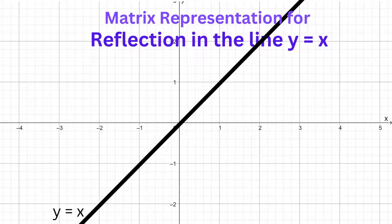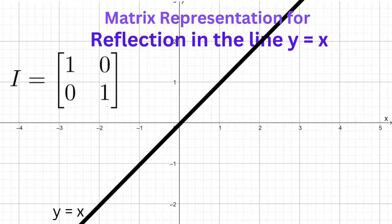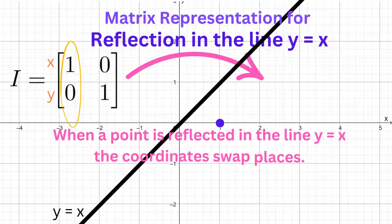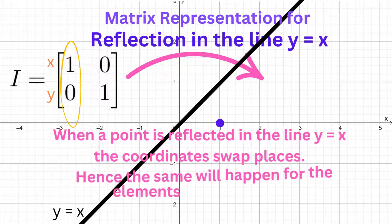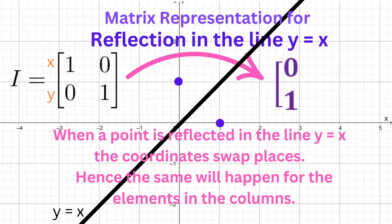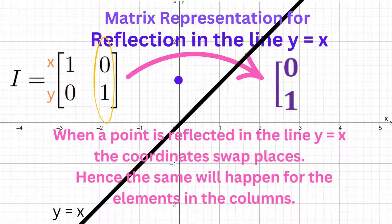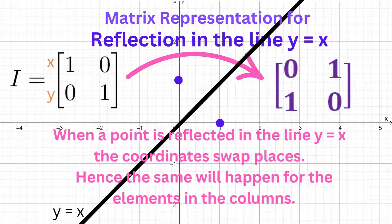Let's derive the transformation matrix for a reflection in the line y = x. As always, we'll get the reflection matrix by tweaking the identity matrix. The values in the first column represent the point (1, 0). Recall that when a point is reflected in the line y = x, the coordinates swap positions. So (1, 0) becomes (0, 1), therefore the first column in the transformation matrix will be (0, 1). The second column represents (0, 1), which swaps to become (1, 0), so the second column in the transformation matrix is (1, 0).